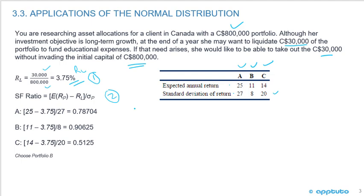Step two: calculate the safety first ratio for each portfolio — that's the expected return minus RL, divided by standard deviation. For A: 25% minus 3.75% divided by 27% equals 0.787. For B: 11% minus 3.75% divided by 8% equals 0.906. For C: 14% minus 3.75% divided by 20% equals 0.5125. You choose portfolio B, as it has the highest safety first ratio.